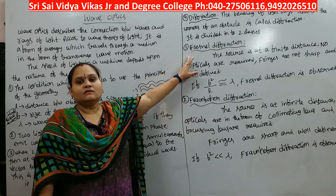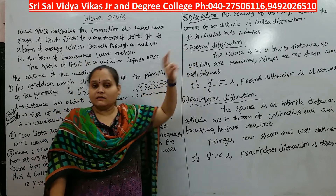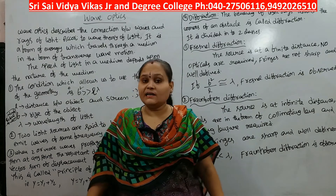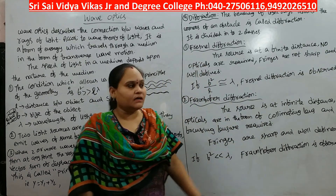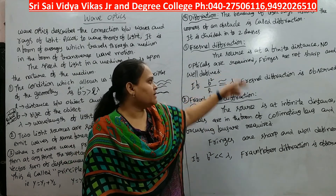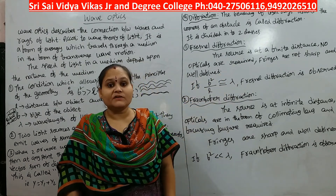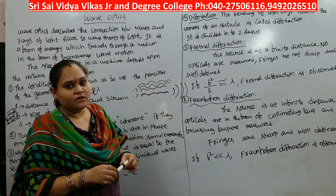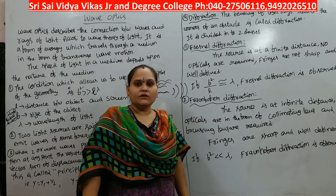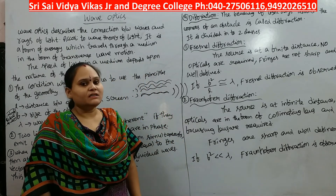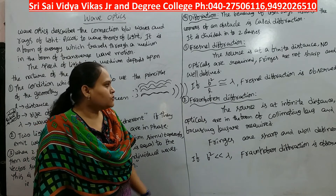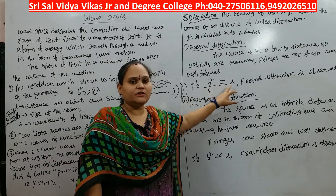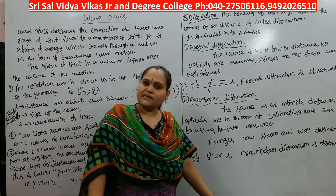In Fresnel diffraction, the source is placed at a finite distance — some 5 or 10 centimeters. No optics, meaning no lenses, are used. The fringes formed are not sharp and well defined. The condition for Fresnel diffraction is b²/l ≈ λ.